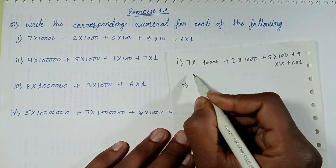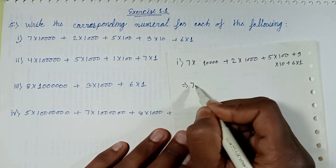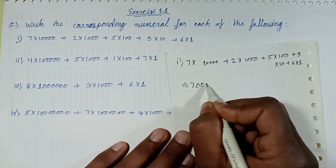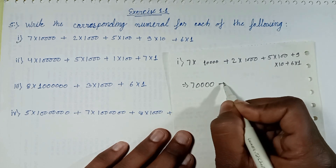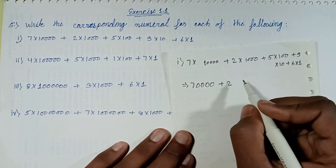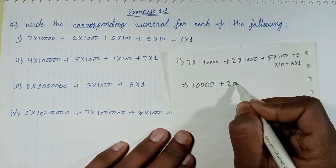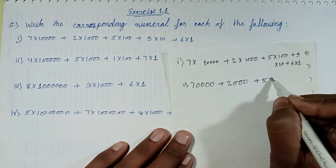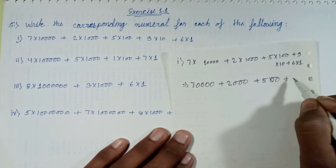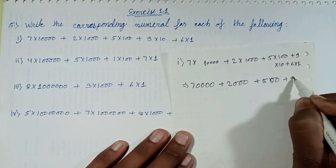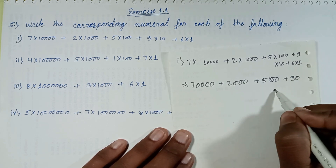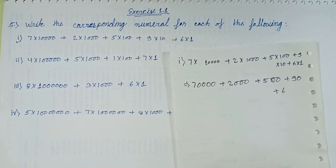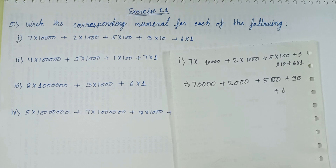Next step: 7 multiplied with 10,000 gives 70,000. Plus 2 multiplied with 1,000 gives 2,000. Plus 5 multiplied with 100 gives 500. Plus 9 multiplied with 10 gives 90. Plus 6 multiplied with 1 gives 6.